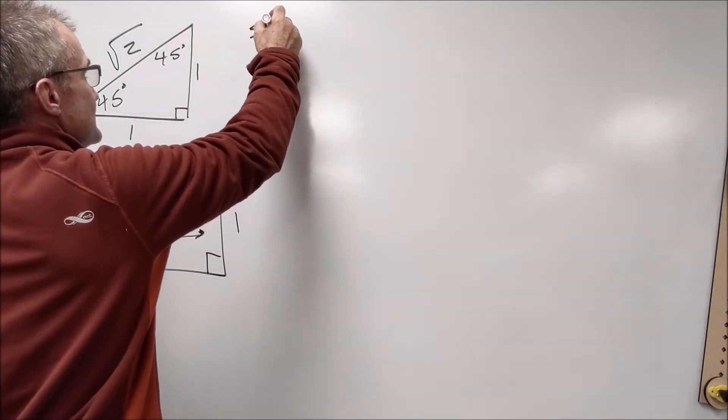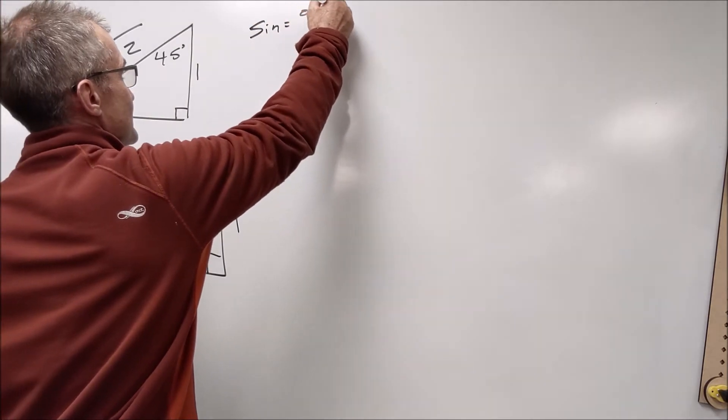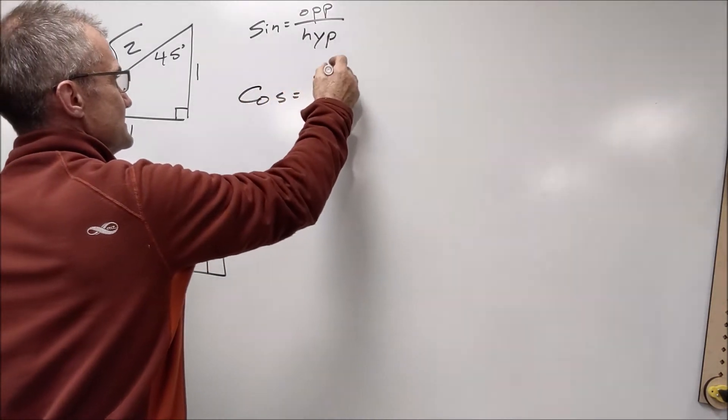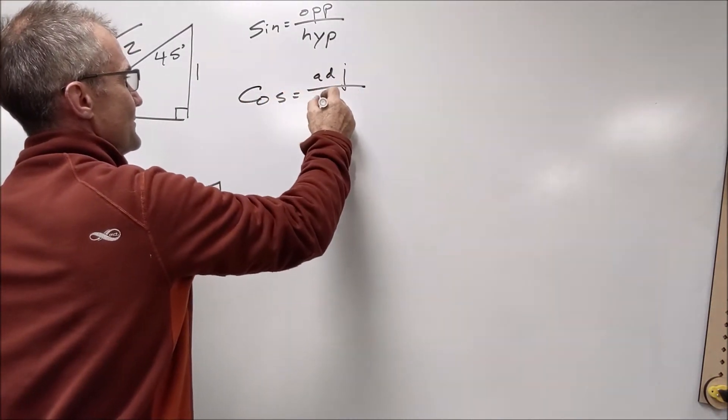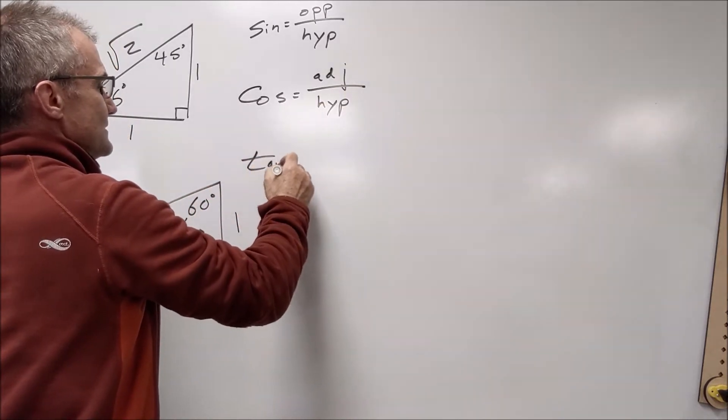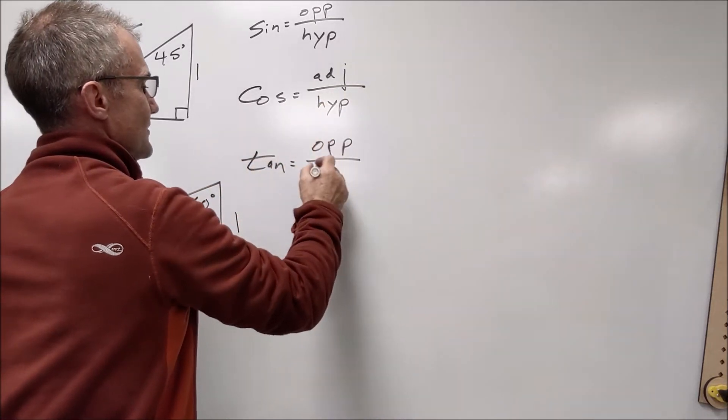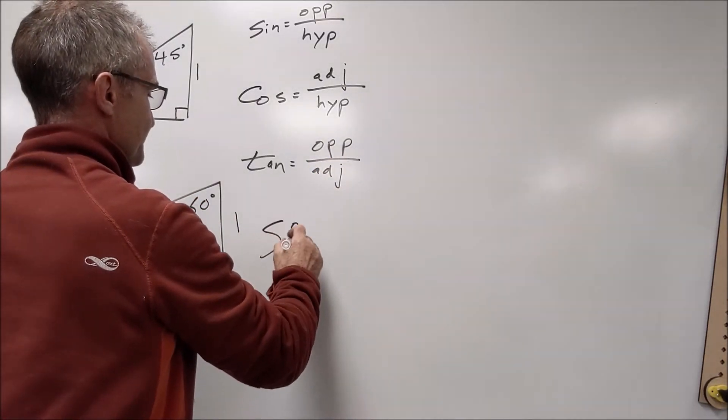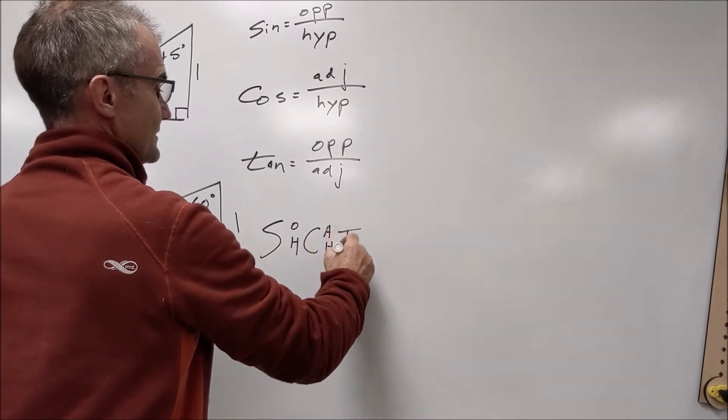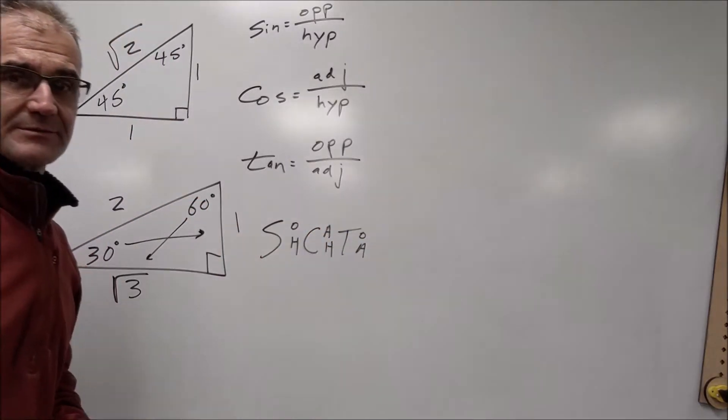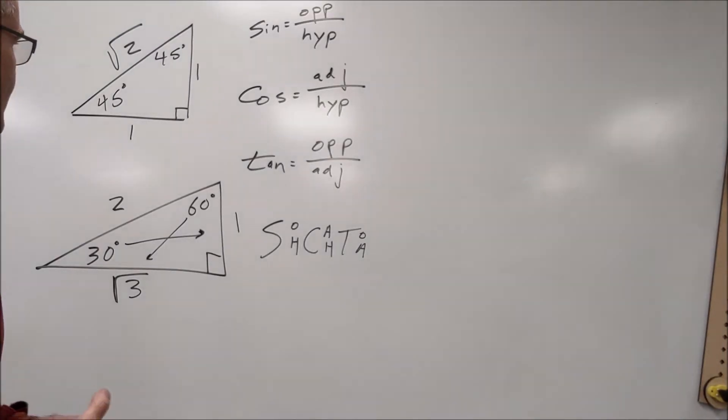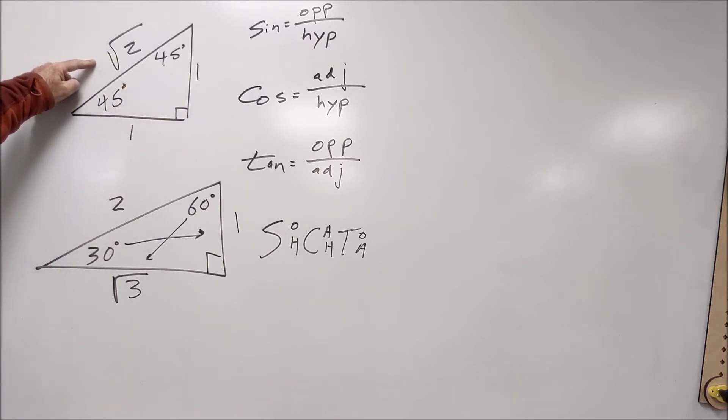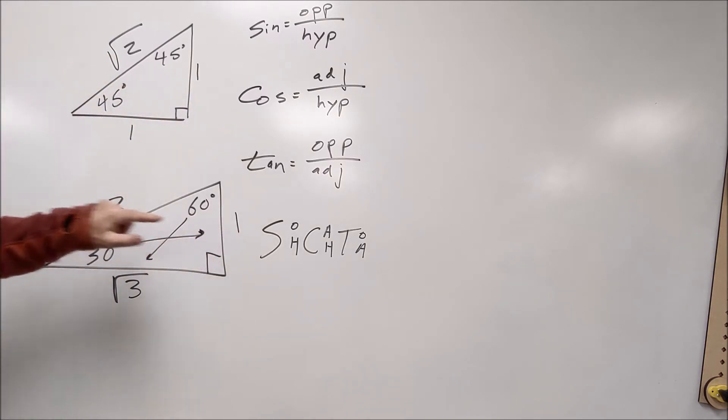Sine is equal to the ratio of the opposite over the hypotenuse. Cosine is the ratio of the adjacent over the hypotenuse, and tangent is the ratio of the opposite over the adjacent. My mnemonic device is SOHCAHTOA, and that helps remind me what those three Greek words mean. So if I ask you the sine of 45, it would be the opposite 1 over the hypotenuse root 2. The sine of 30 is 1 over 2.